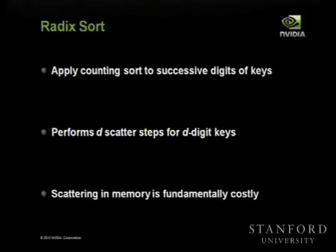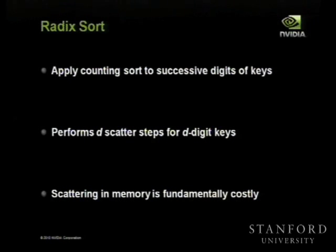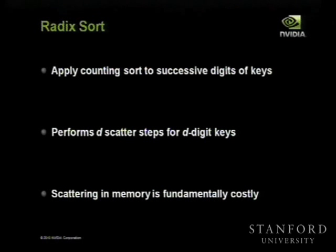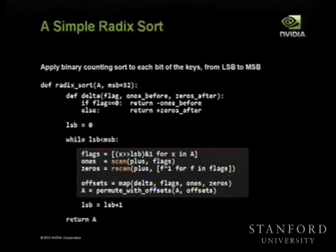In words: I apply this counting sort to successive digits from least to most significant, performing a scatter in each step, looking at binary digits. It might be non-obvious that sorting individually by each digit from least to most significant actually sorts all the numbers — but it is actually true, and it's one of the oldest sorting methods. Mechanical card sorting machines used to do this sort of thing.